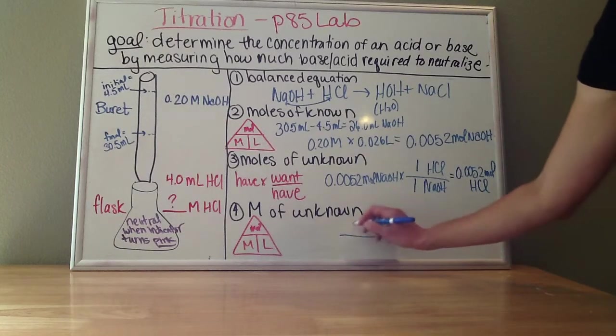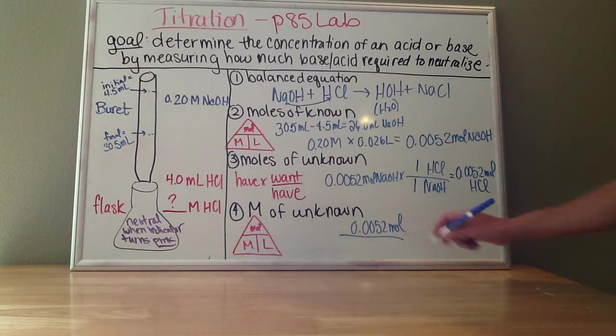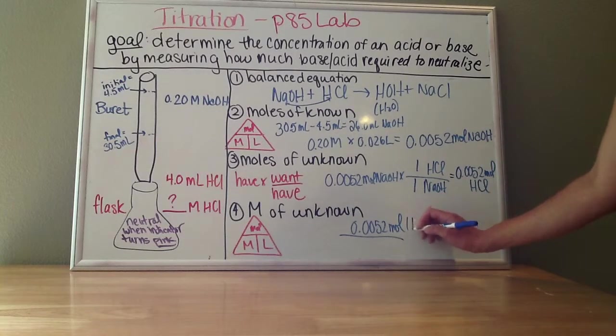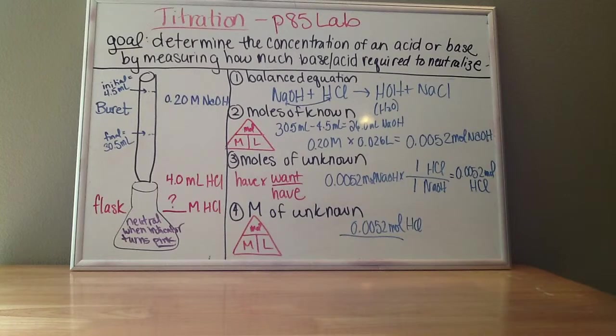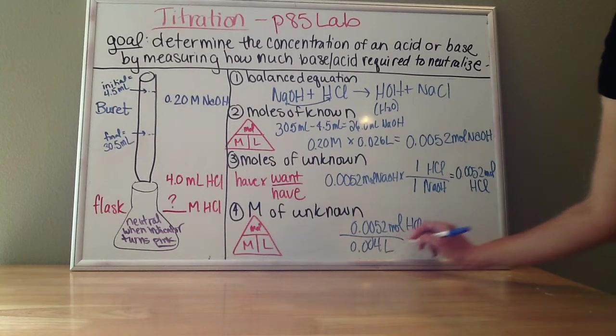So my moles is 0.0052 moles of HCl. The liters—make sure you use the right volume. Notice how over here we have three volumes that are given. So make sure you're choosing the volume that matches your unknown, which is the acid. So I have 0.0052 moles of acid, and my volume of my acid was four milliliters divided by a thousand, which is 0.004 liters.